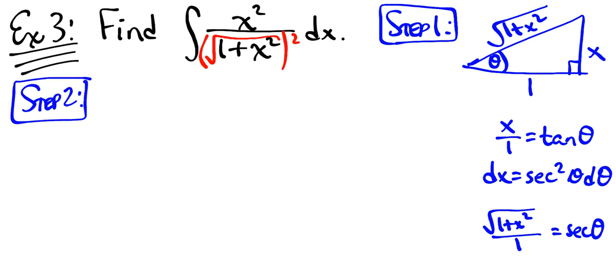In step two, we replace everything that smells like our x with something that smells like theta. What's x squared? Well, x squared is tan squared theta. The denominator is the radical squared.